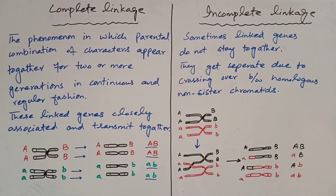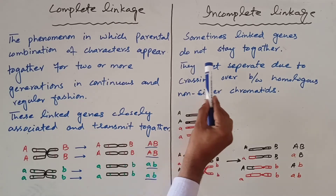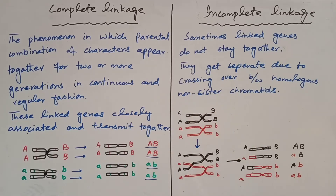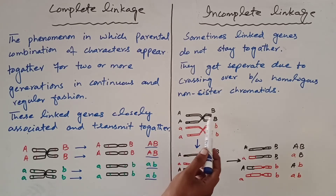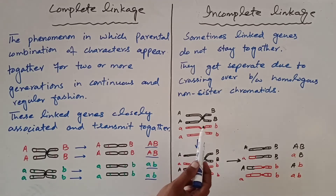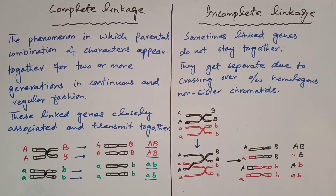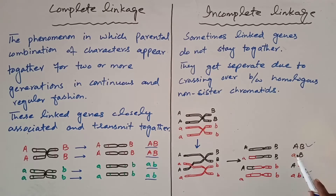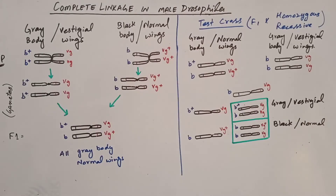In incomplete linkage, sometimes linked genes do not stay together — they get separated due to crossing over between homologous non-sister chromatids. For example, genes A and B are linked on the same chromosome, but crossing over occurs. This gives parental combinations as well as recombinants. So in incomplete linkage there may be a separation of linked genes.